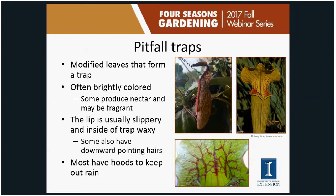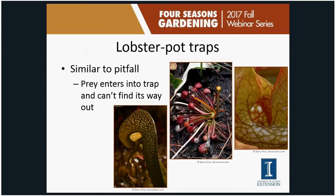Some species, like the purple pitcher plant, don't have hoods covering the opening, so rainwater periodically fills those. Next are lobster pot traps, which are similar to pitfall traps but have a downward-facing opening the insect crawls into. When insects try to escape, they fly upward toward translucent white areas that let light through. They keep bumping into that part of the plant, tire out, and fall into the trap — the same concept as lobster traps used in the ocean.